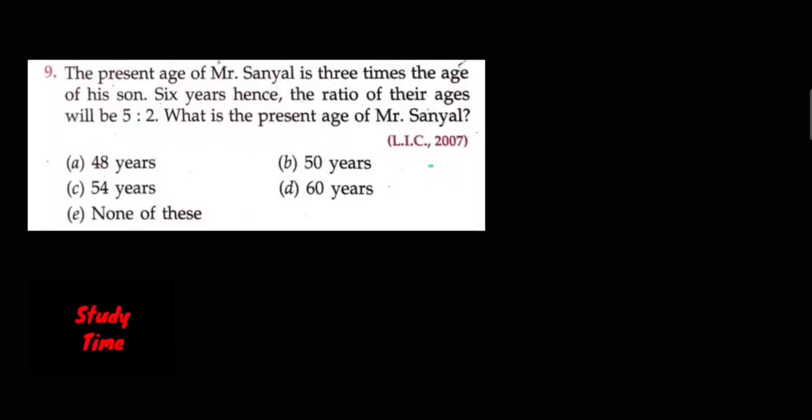Question number nine: the present age of Mr. Son is three times the age of his son. Six years hence, the ratio of their ages will be five is to two. What is the present age of Mr. Son?